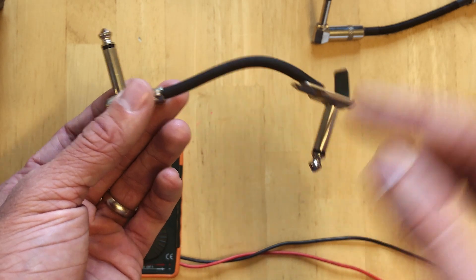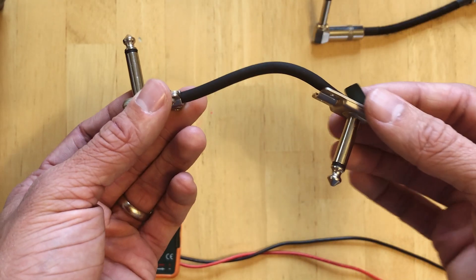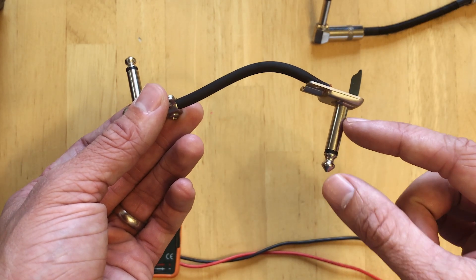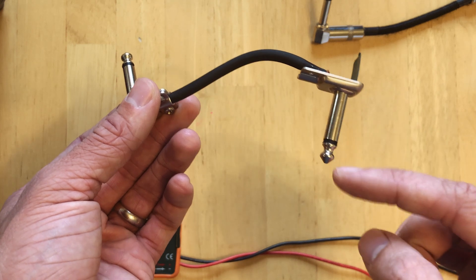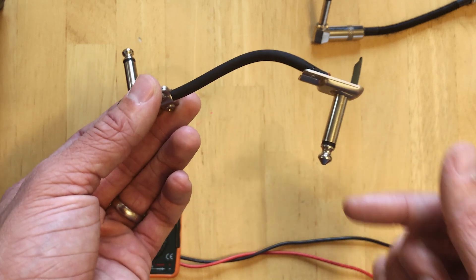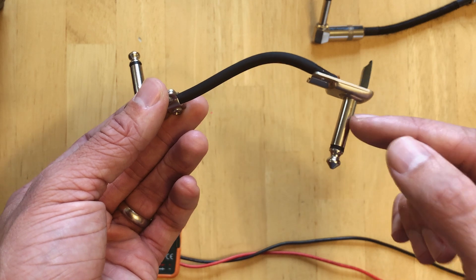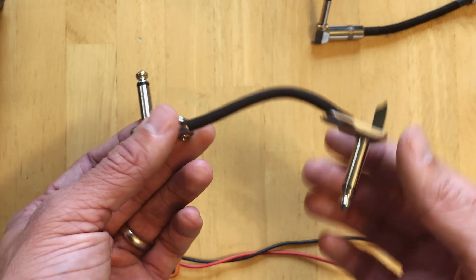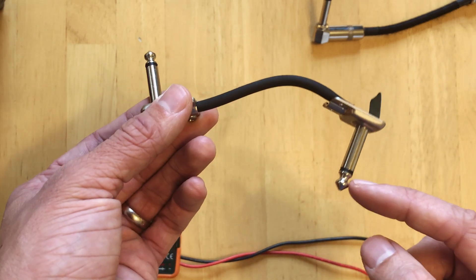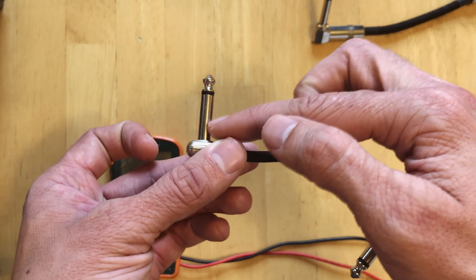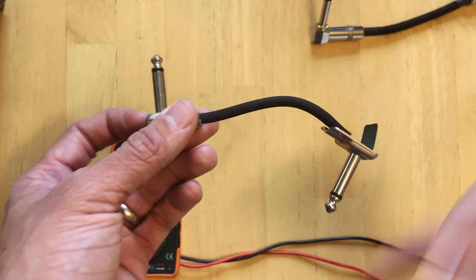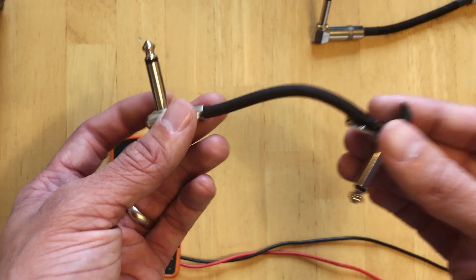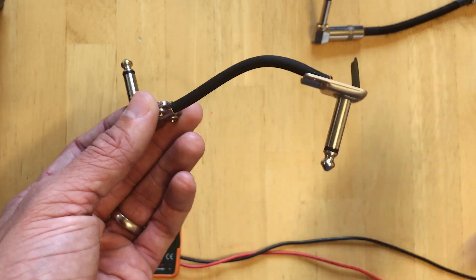And the last part you want to test, and this is probably the most important part, is you want to test the tip to the ground of the opposite side. That's how I do it. I mean, you can test the tip to the ground here, and if you're getting zero resistance on your multimeter, which would mean that this part is connected to the ground, then you know you have a bad cable. But I like to test the tip from this side to the sleeve of this side, just to see, because then you're basically sending that signal through the actual wire and the cable to test that the cable is good. If you just test it here, you're just testing the plug.